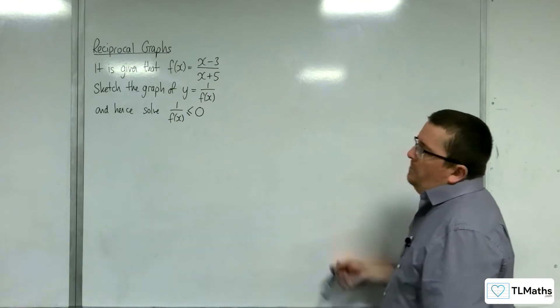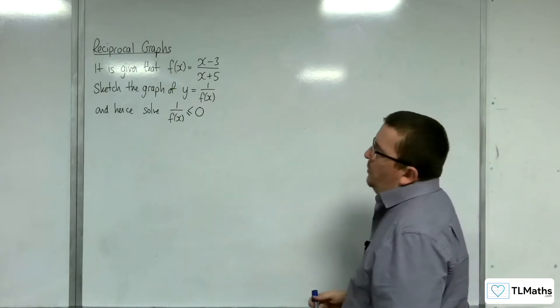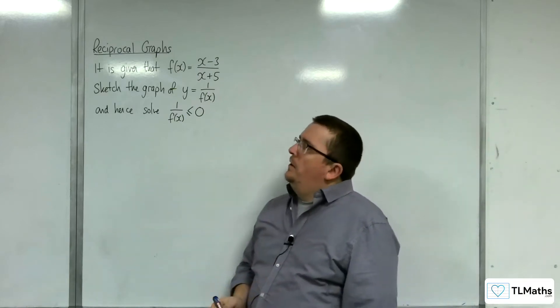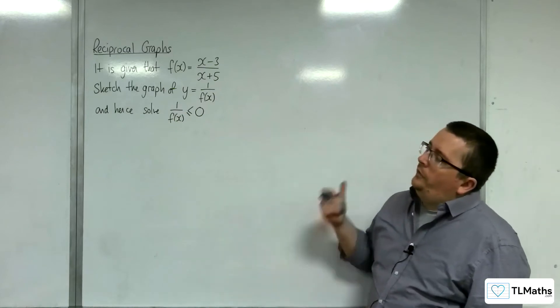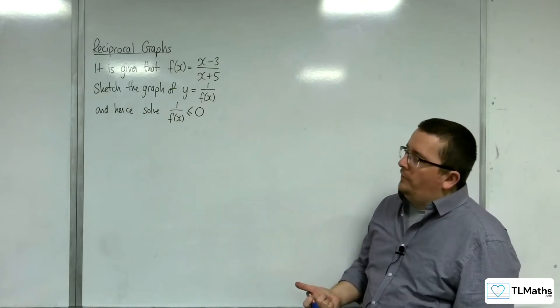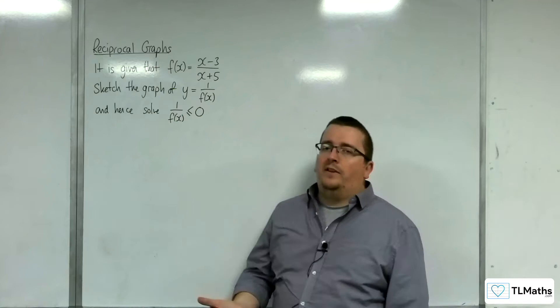So, in this problem, we've been given that f of x is equal to x take away 3 over x plus 5. We have been asked to sketch the graph of y equals 1 over f of x, and hence solve 1 over f of x is less than or equal to 0.